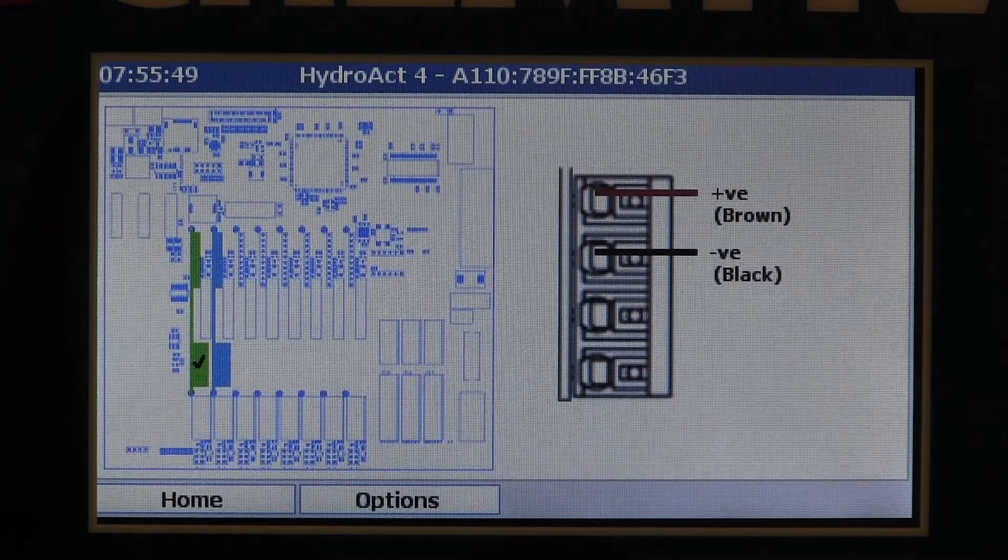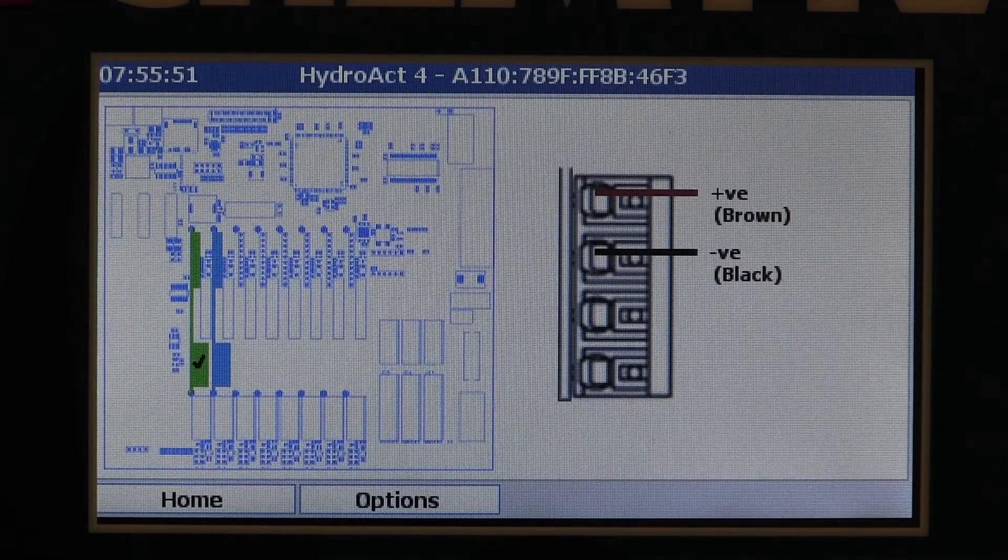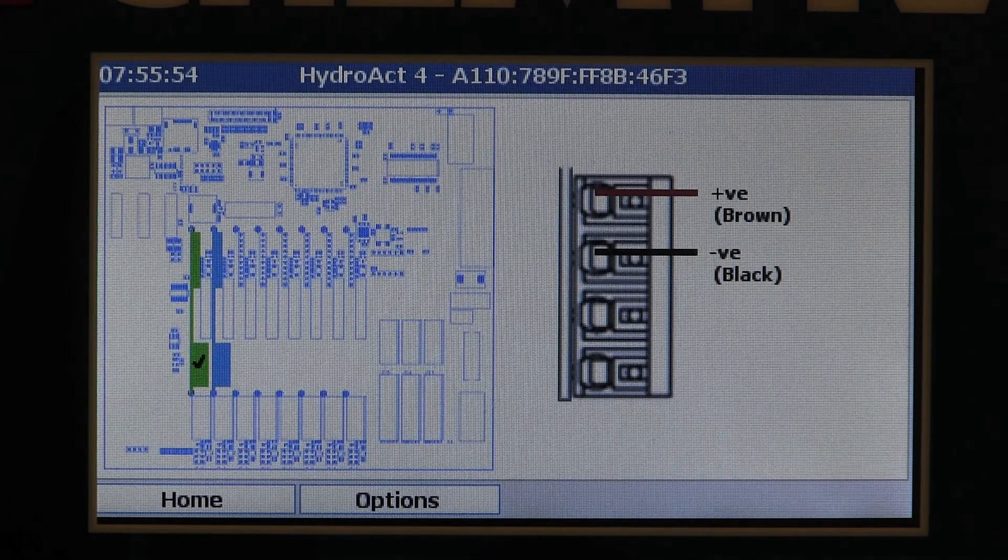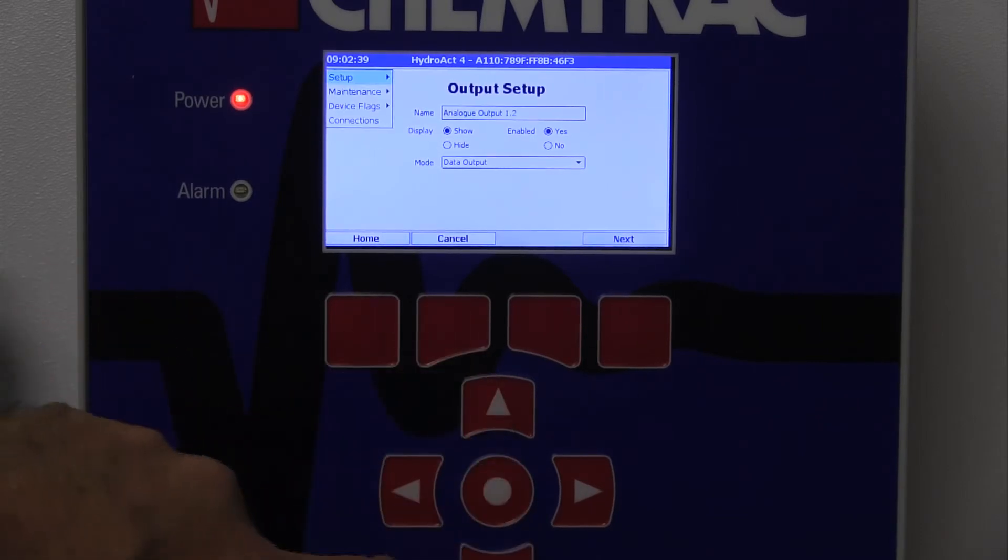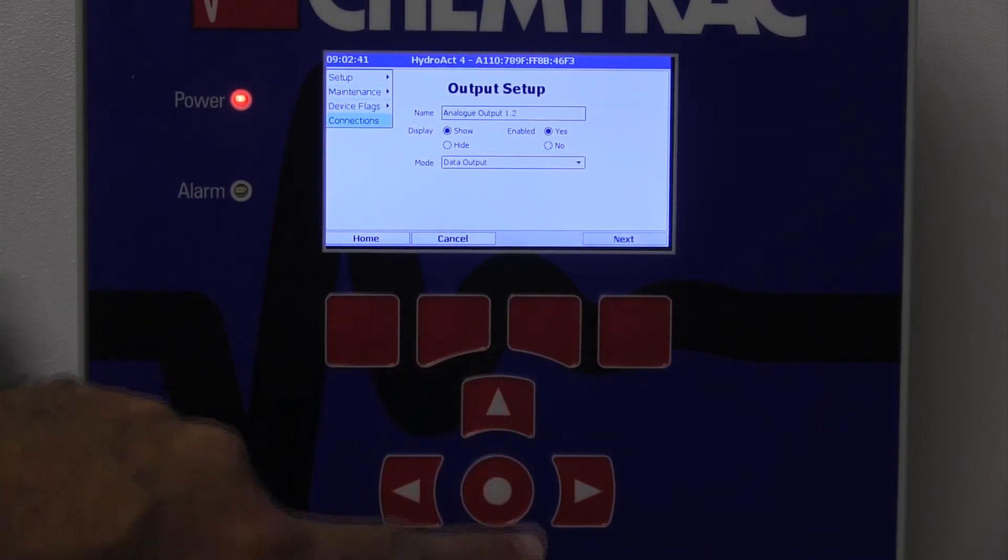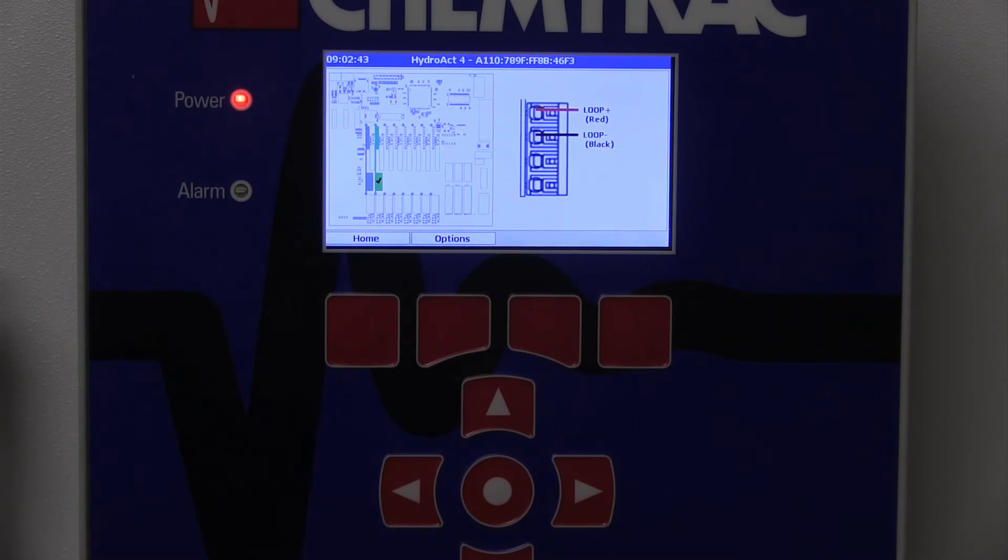The Hydroact analyzer offers on-screen wiring connection diagrams for the sensor as well as for various I.O. options. These diagrams can be accessed through the menu options including analog outputs, relays, and digital communication.